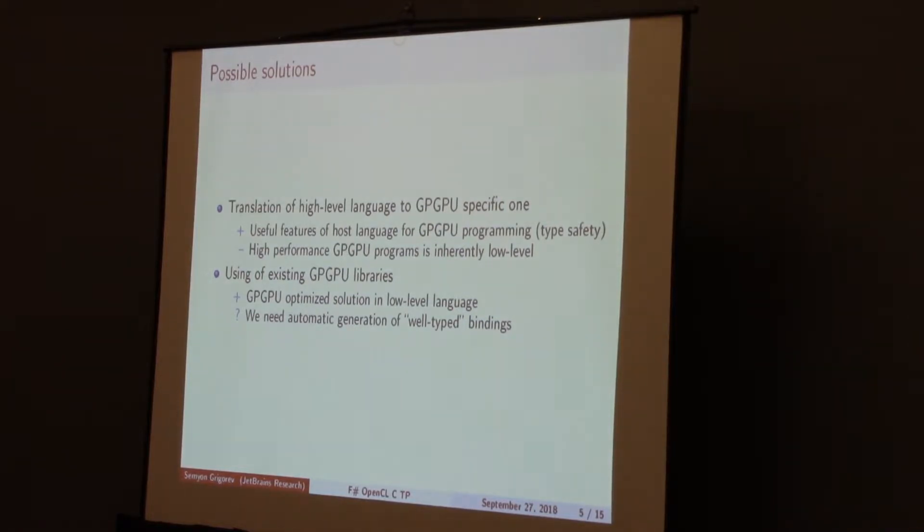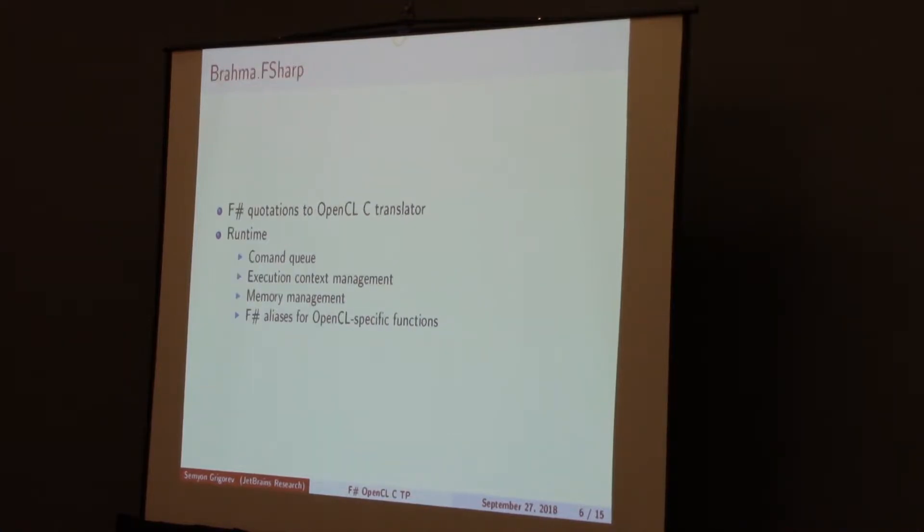How we can solve this problem? We can use special libraries which are tuned for GPUs. But we don't want to create bindings for these libraries manually, just because we are too lazy. So we want to provide a solution which can automate this process. And of course, we want to create well-typed bindings. Because it's not cool to use untyped bindings in a statically typed language.